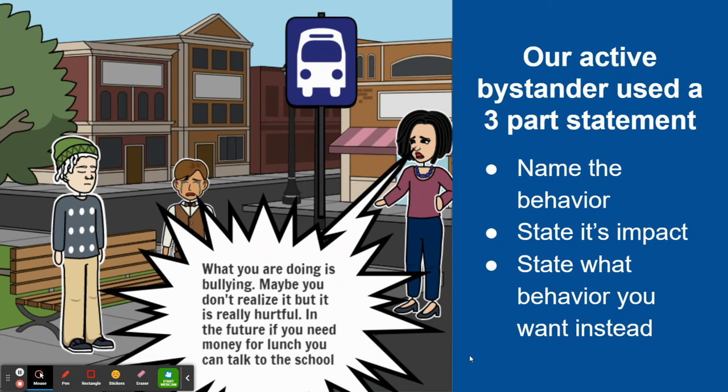There are two ways that you can intervene directly. You can use a three-part statement, which is where you name the behavior, state its impact, and state what behavior you want instead. So she is saying: 'What are you doing? What you are doing is bullying. Maybe you don't realize it, but it is really hurtful. In the future, if you need money for lunch, you can talk to the school.' That is an example of the three-part statement.